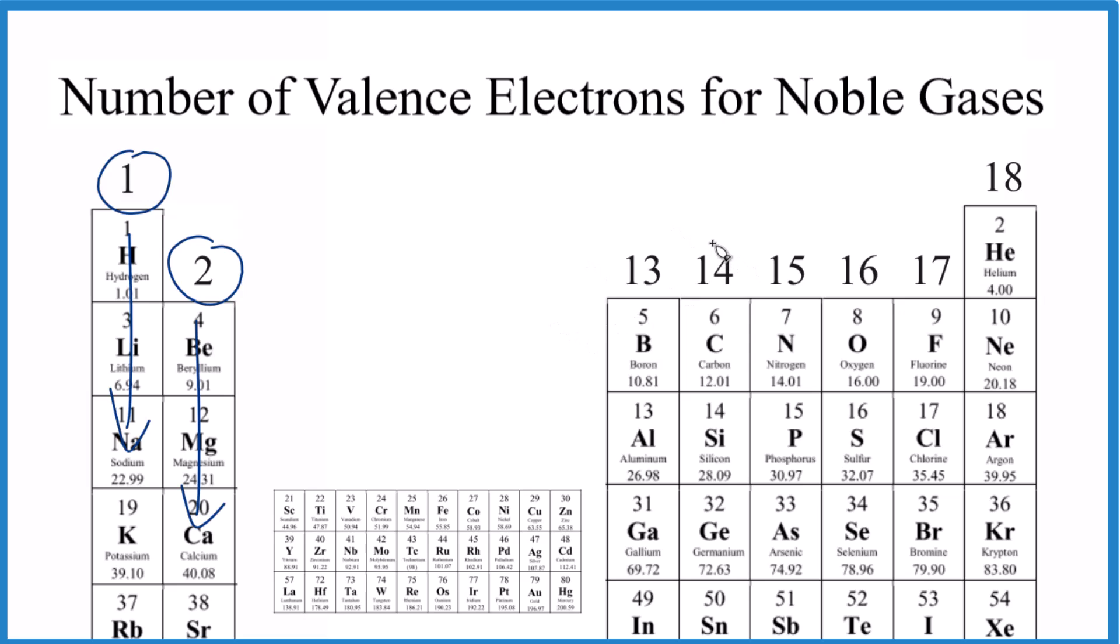We go to group 13, it used to be called 3A, three valence electrons. Four, five, six, seven for group 17. And then for group 18, we have eight valence electrons for all of these.